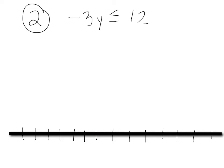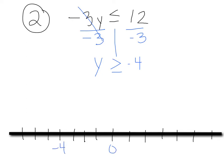Next: negative 3y is less than or equal to 12. To solve this, we divide by negative 3. You should have bells and whistles going off because you're dividing by a negative — when you divide by a negative, you have to flip the sign. So you get y: instead of less than or equal to, now it's greater than or equal to negative 4. On the number line, negative 4 is to the left of 0. Because it does equal it, we use a closed dot. Numbers greater than or equal to negative 4 are to the right, so we shade to the right. In interval notation, answers start at negative 4 and go to positive infinity; use a bracket at negative 4, parenthesis at infinity.